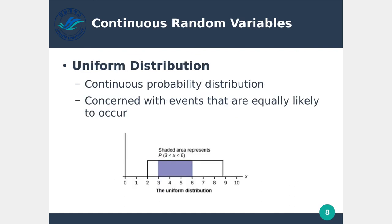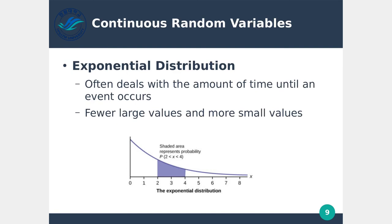The uniform distribution is a continuous probability distribution. As we saw with the curve, if something is more likely to land at a particular point, the curve raises up; if it's less likely, the curve goes down. In the uniform case, it's completely flat — just a straight line — meaning the probability of ending up with any of these values is the same. We're concerned with events equally likely to occur. The exponential distribution often deals with the amount of time until an event occurs, or events over time — for example, how rapidly a virus spreads.